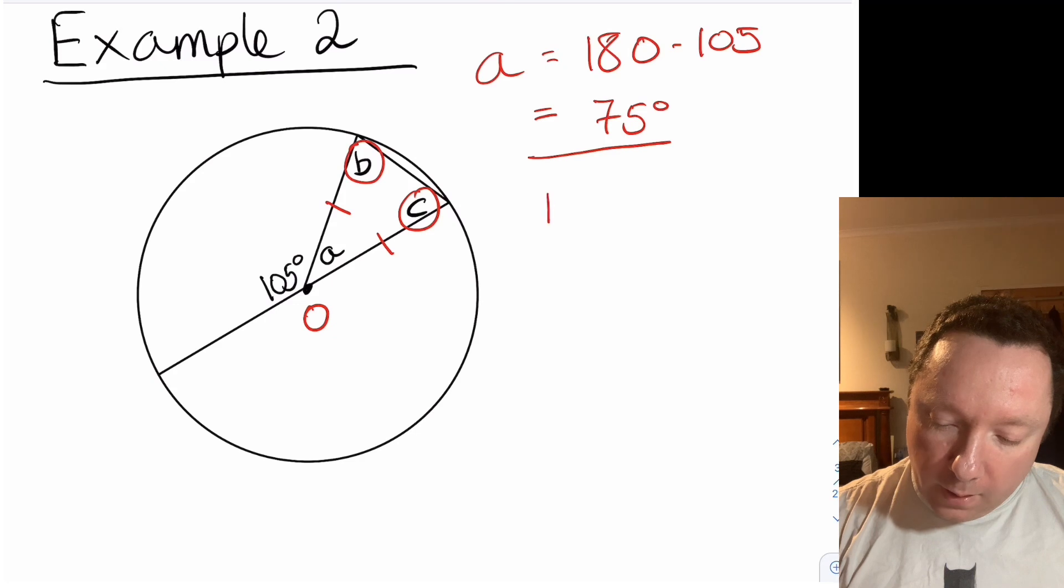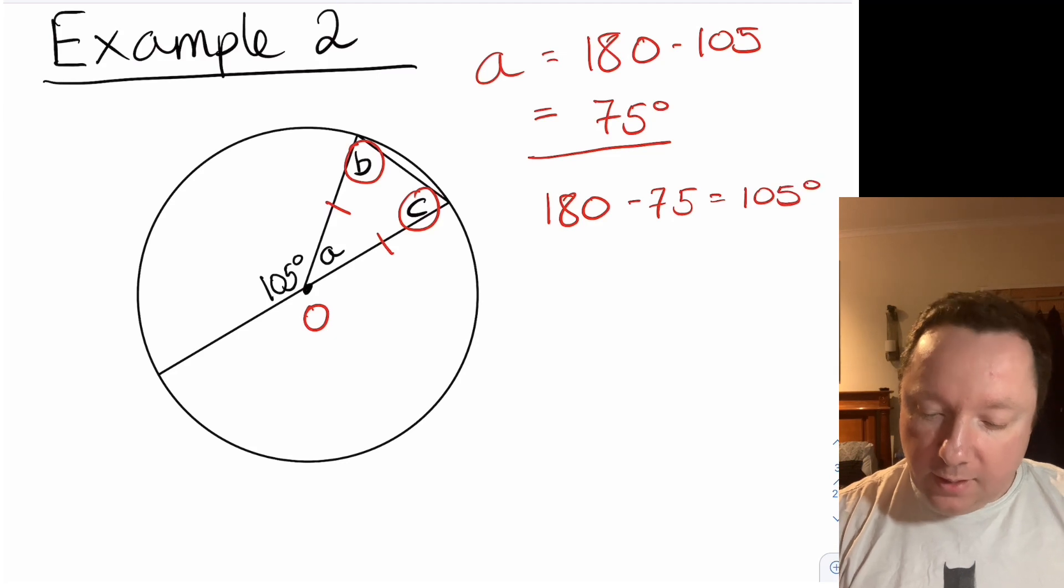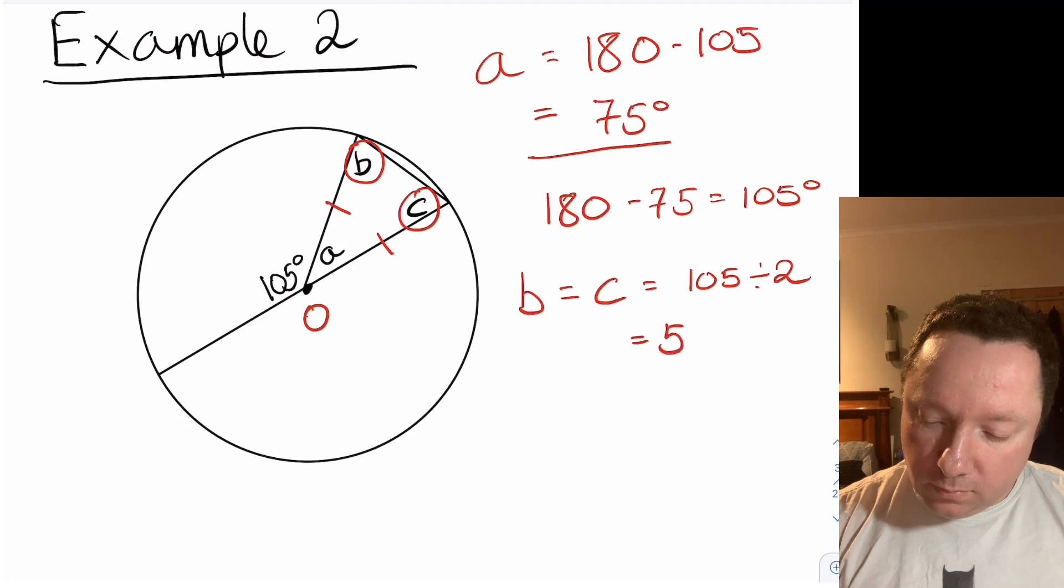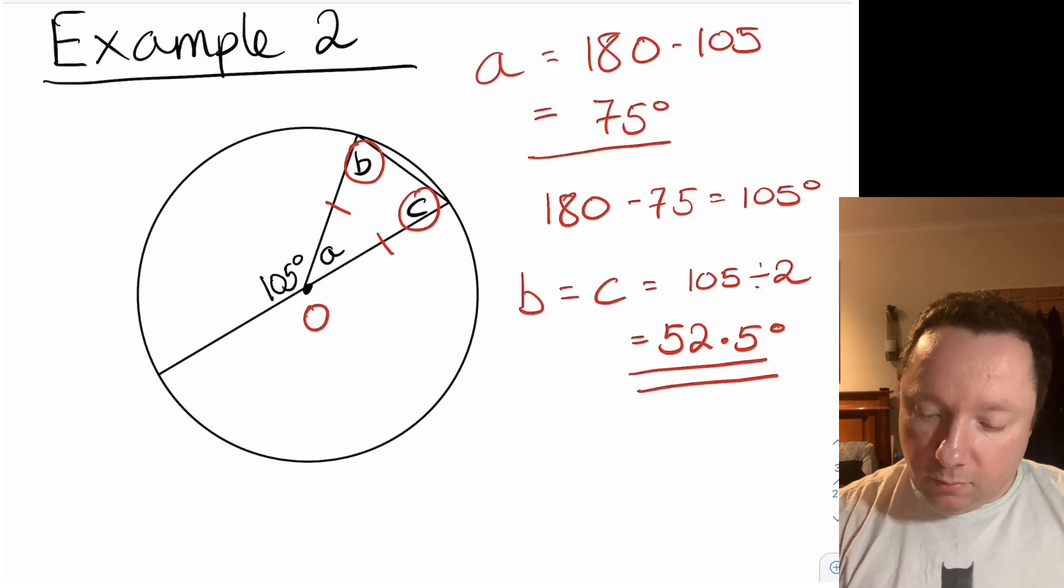So I've got 180 minus 75 takes us back to 105. And since b and c are the same, b equals c which equals 105 divided by 2, 52.5 degrees. And then we've got all our angles.